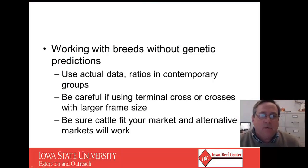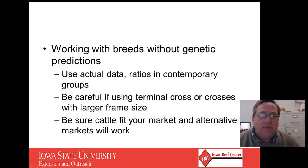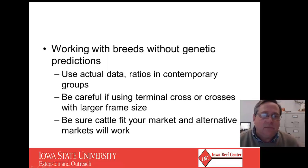It's really kind of a problem to try to work with breeds without genetic predictions, because in that case you're probably best using direct data that's only collected on the animal. You might have it in contemporary groups but you don't have EPDs. So if you are going to use breeds that are not deep in numbers, you're going to want to look at more things about that animal and dig the pedigree deeper. You need to make sure your cattle fit your market and alternative markets, so be careful on what kind of bulls you use in heifer development.